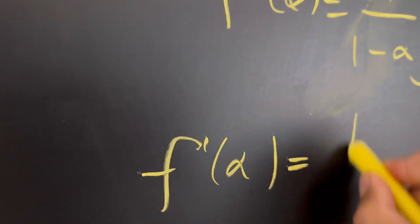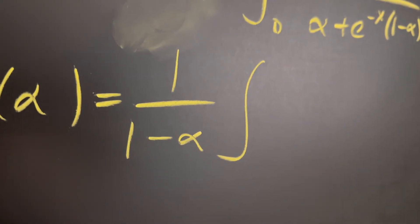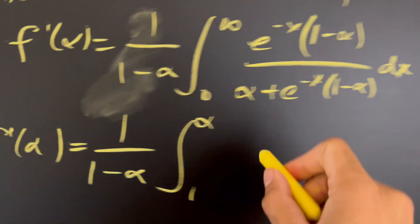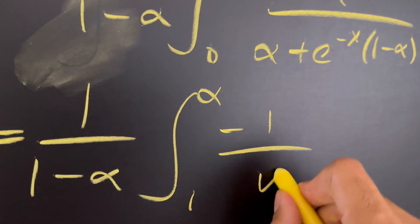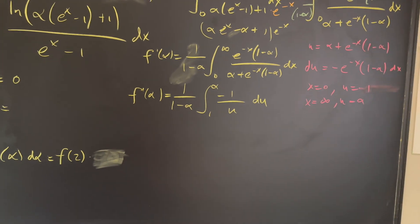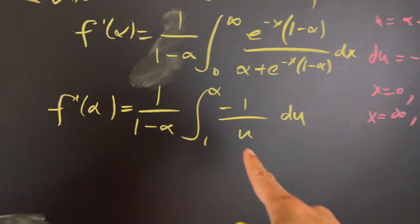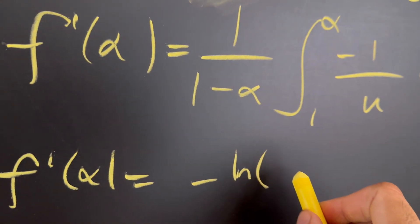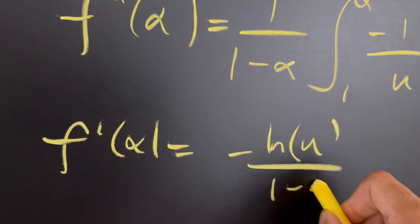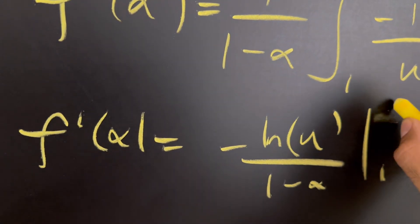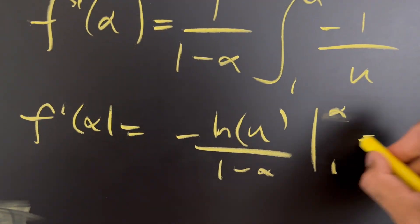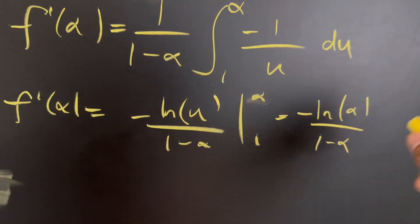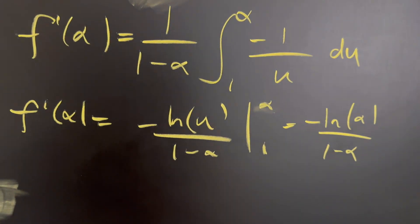So f'(α) equals one over (one minus α) times the integral from one to alpha of negative one over u du. Integrating, we get f'(α) = negative natural log of u over (one minus α), evaluated from 1 to α. Plugging in: negative natural log of α over (one minus α), and natural log of one is zero, so that term goes away.